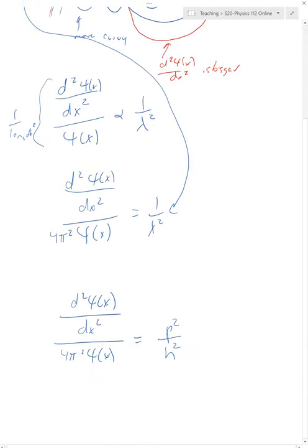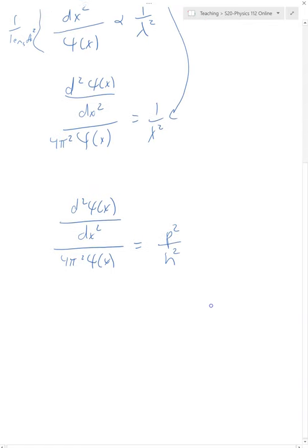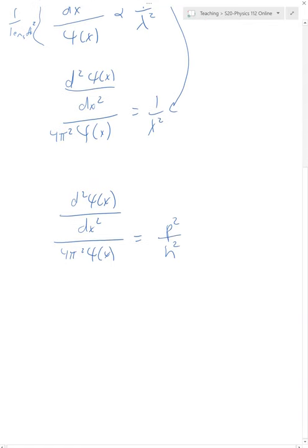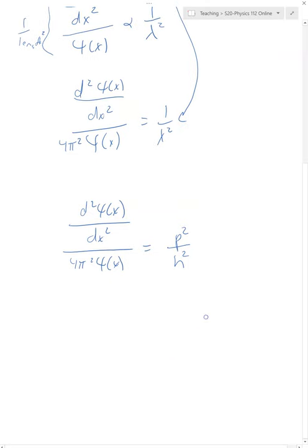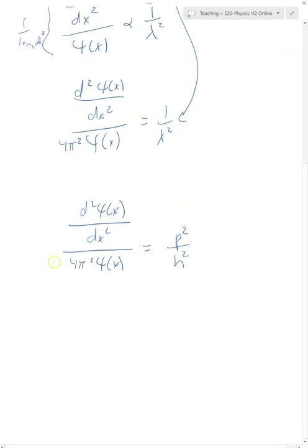So that's not maybe not looking that promising unless you realize, well, wait a second, I can actually put a one over two m over here. So if I put a two m on the bottom here, and I put a one over two m over here, now I've got p squared over two m. p squared over two m is just equal to the kinetic energy. So this is just kinetic energy divided by h squared.